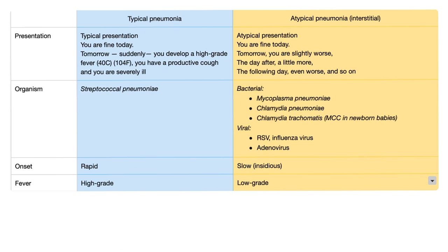Typical pneumonia versus atypical pneumonia. Typical has the typical presentation — you're fine today, and then suddenly tomorrow you develop a high-grade fever of 104, you have a productive cough, and you are severely ill. This is typical.